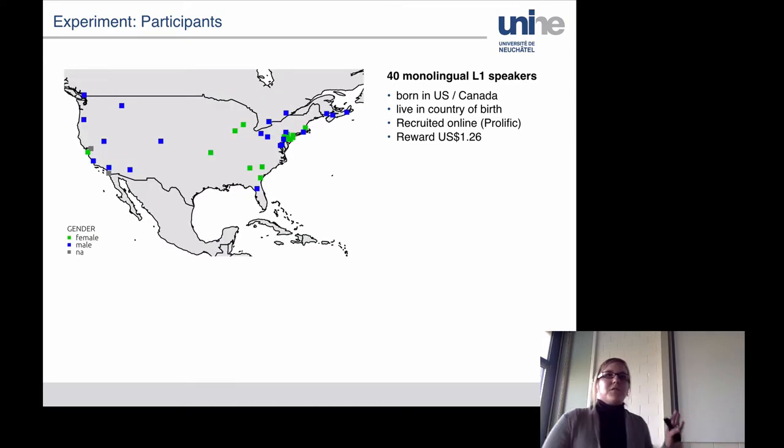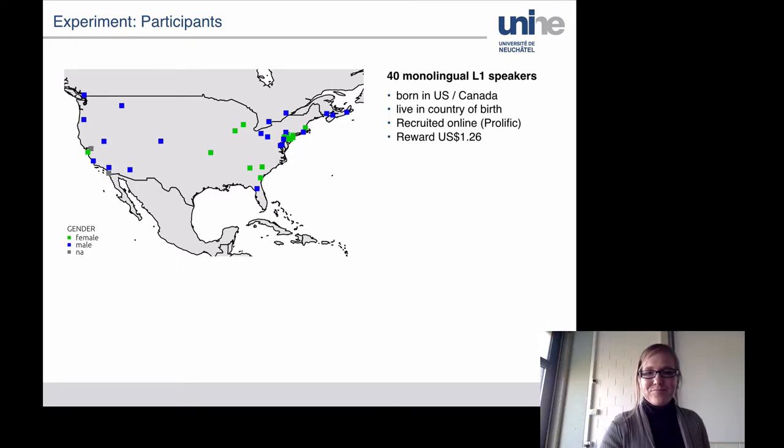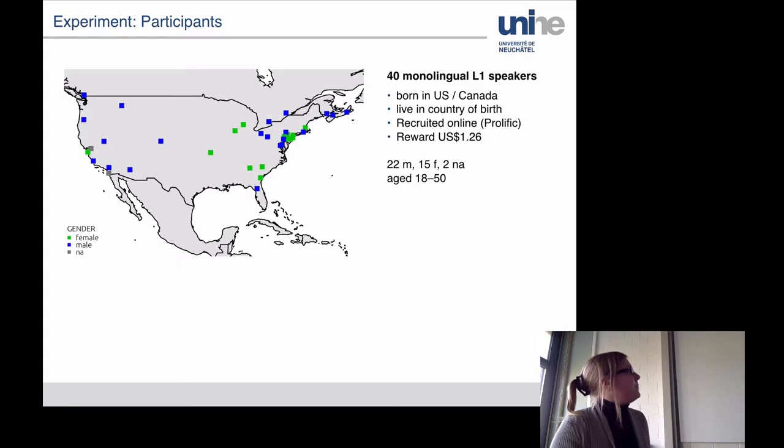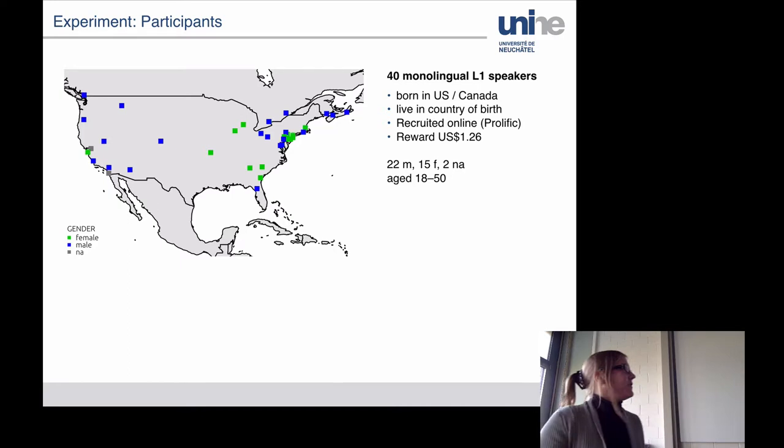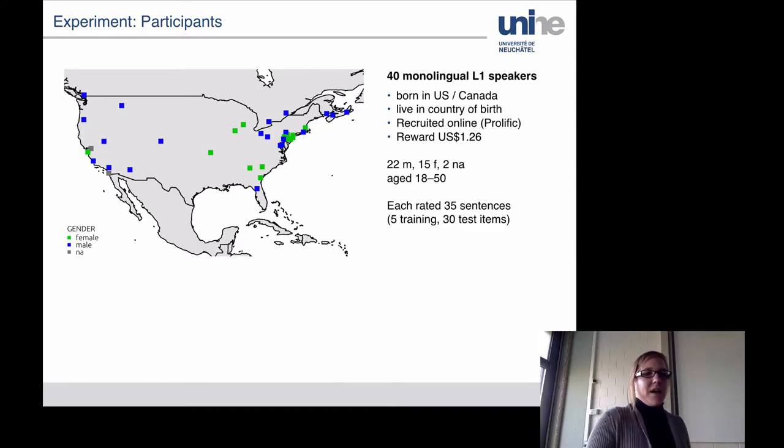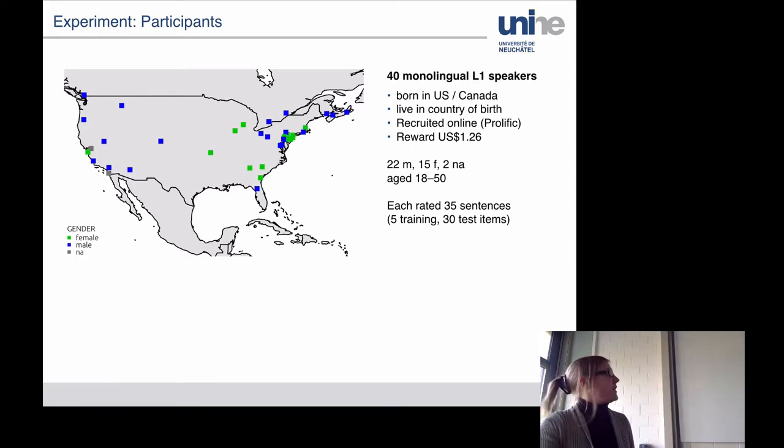I set them up in Qualtrics, that's an online survey software. Did the usual thing, various lists, various blocks, pseudo-randomized, balanced for construction type, verb, attraction, and the type of noun phrase, whether we have a pronoun or a full noun phrase. This is more or less what it looked like. I had five sentences to a page, where only one context occurred per page, and I had only the endpoints labeled. And I asked participants to rate how likely they would find that sentence in a conversation with friends or family. My participants were 40 monolingual L1 speakers. They were born in the US or Canada, live in the country of birth, have been abroad for a maximum of six months in their lives, and they were recruited online through Prolific, a crowdsourcing platform, and they were paid for the study, which took an average of three minutes.